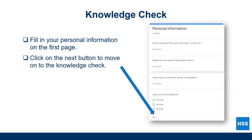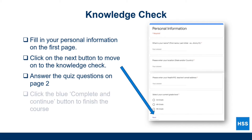You will be prompted to answer several questions about the content covered in the educational video. Be sure to do your best as you only have one opportunity to submit your responses. Once you have submitted your answers for the knowledge check, click the blue Complete and Continue button to finish the course. The progress bar on the left side of the screen should say 100% complete and you should see check marks beside each page listed. If it does not, you must return to one of the pages to fulfill the requirements.